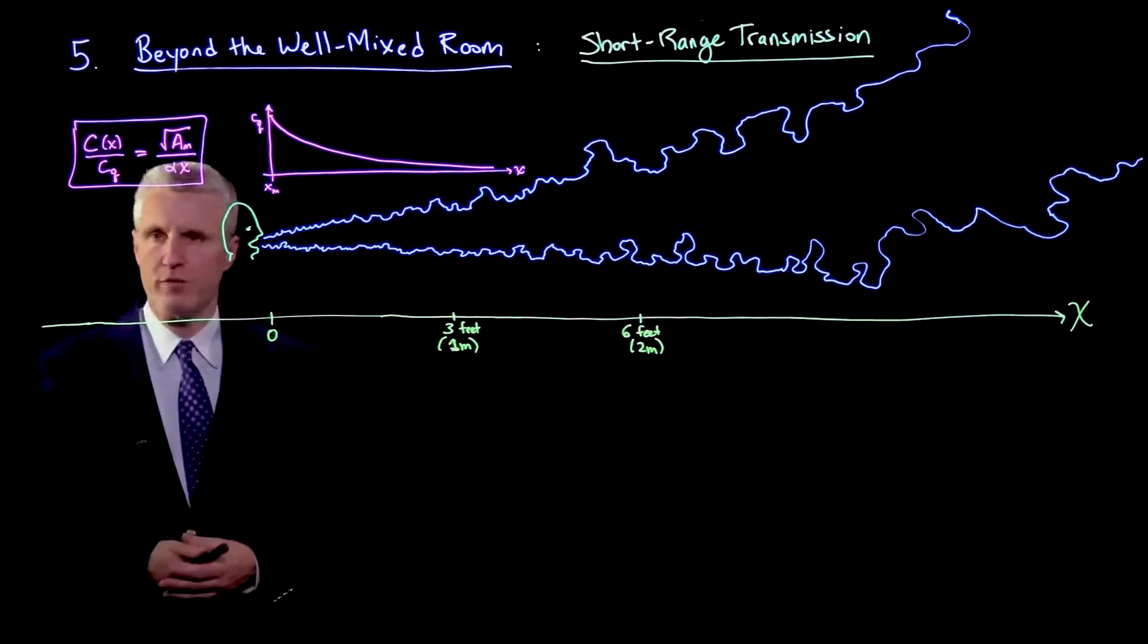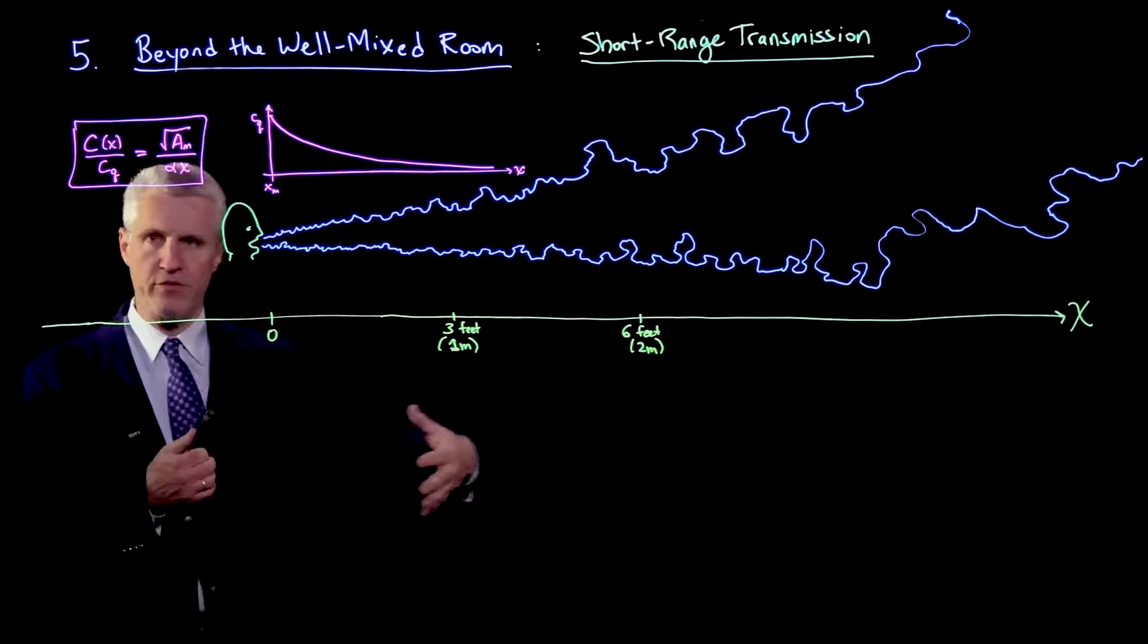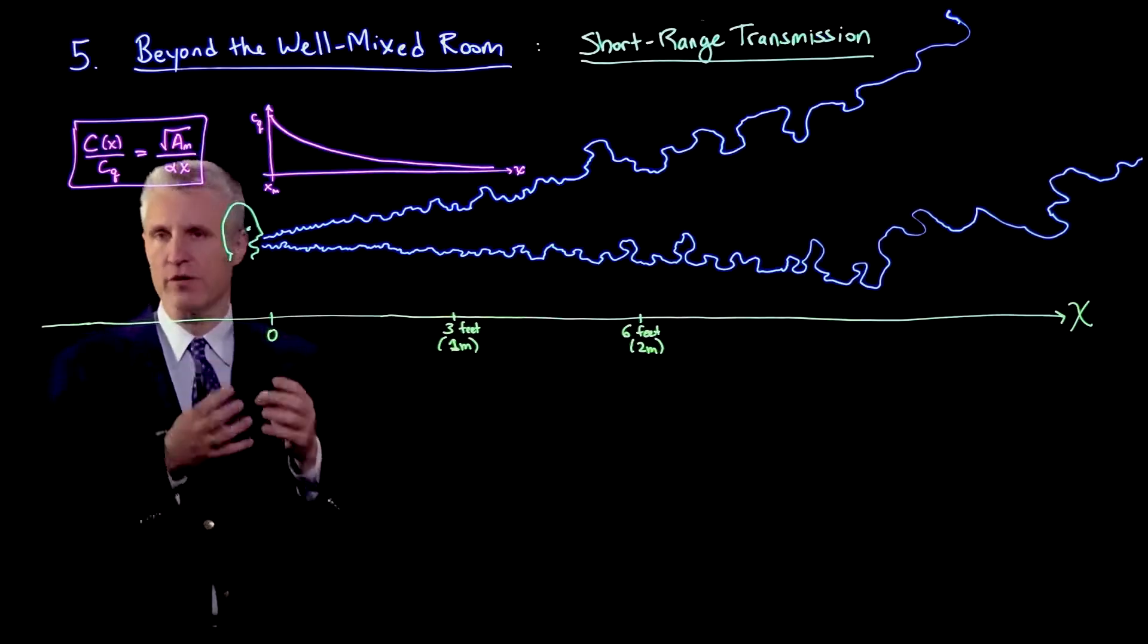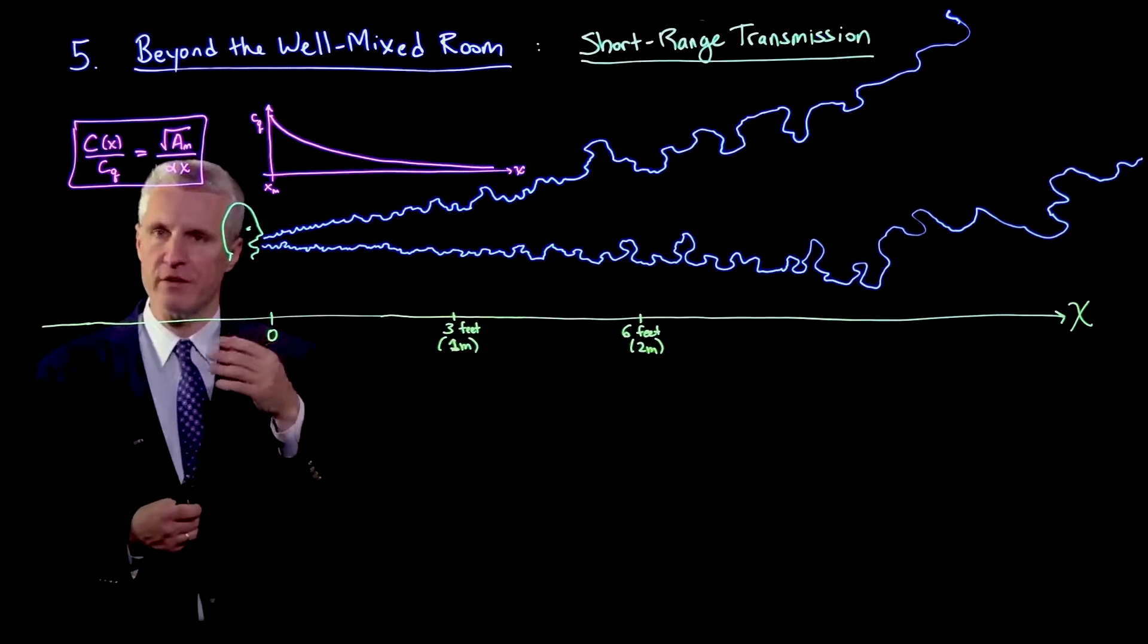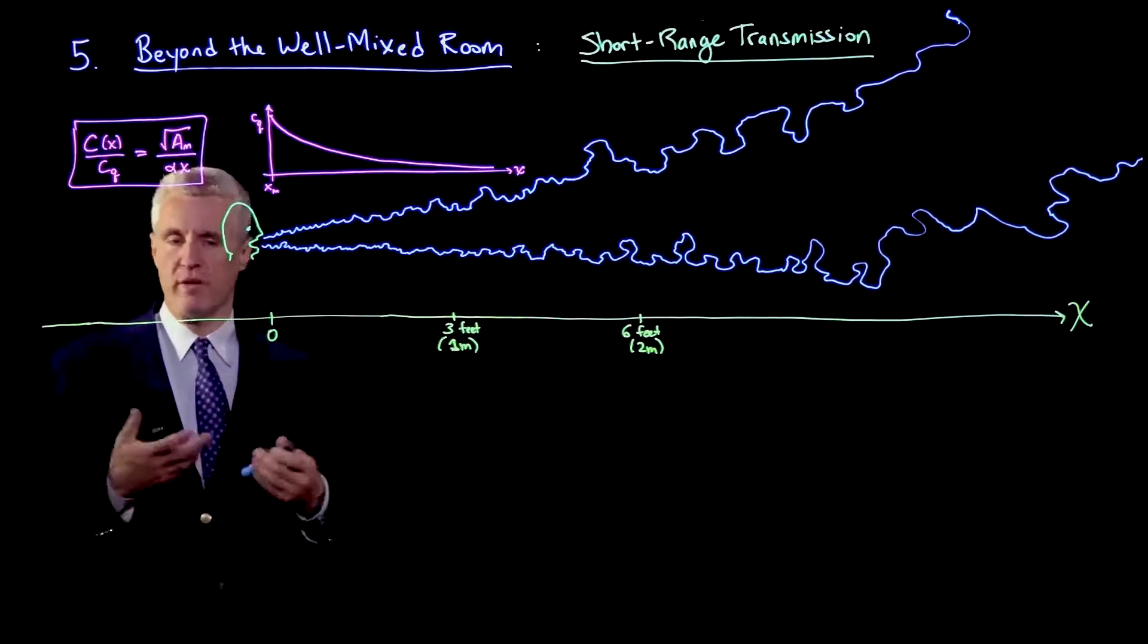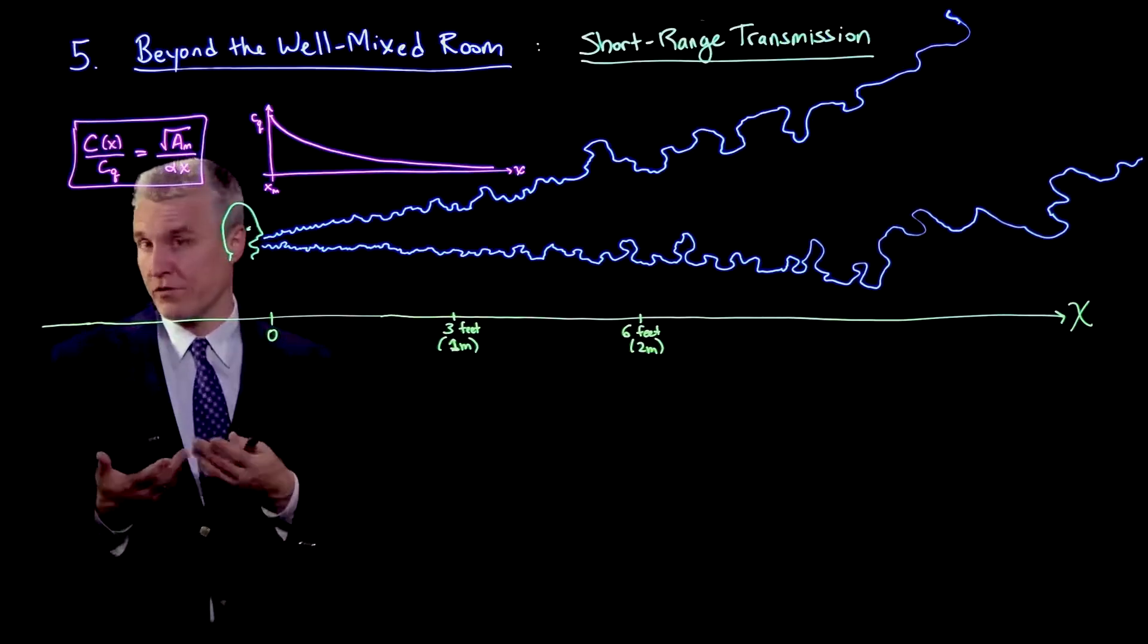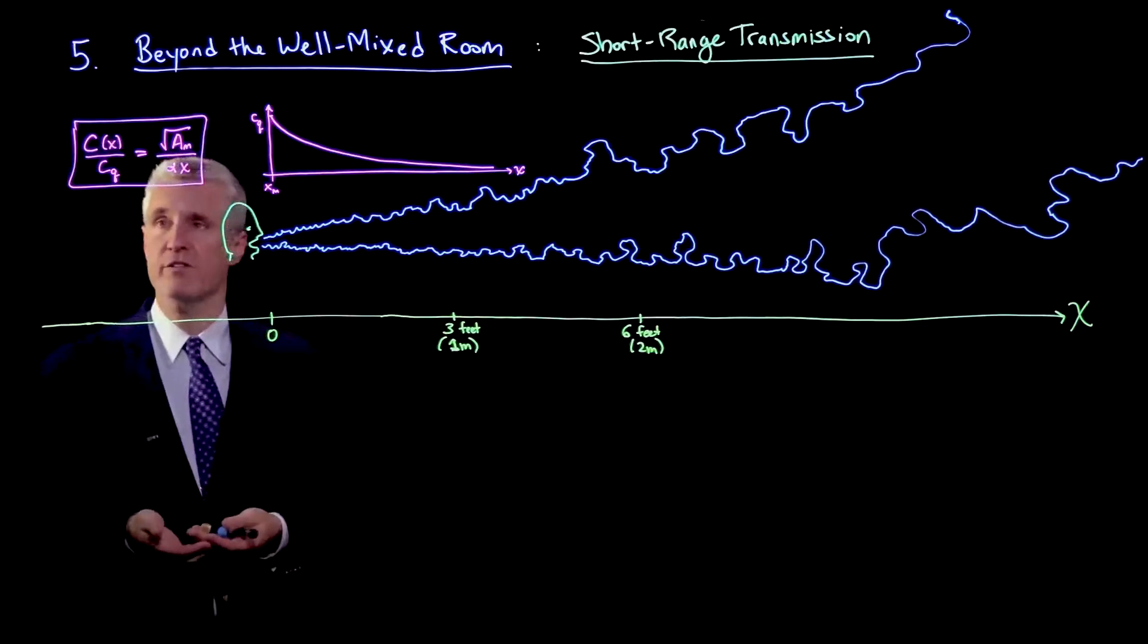The next important part of turbulent plume theory is the distribution of concentration of particles or droplets that are injected with the fluid at the source. As we've derived, the concentration C, which could refer to infection quanta in infectious aerosols, relative to that leaving the mouth CQ, scales as square root of area of the mouth divided by alpha x, where alpha is the turbulent entrainment coefficient around 0.1 or 0.15.